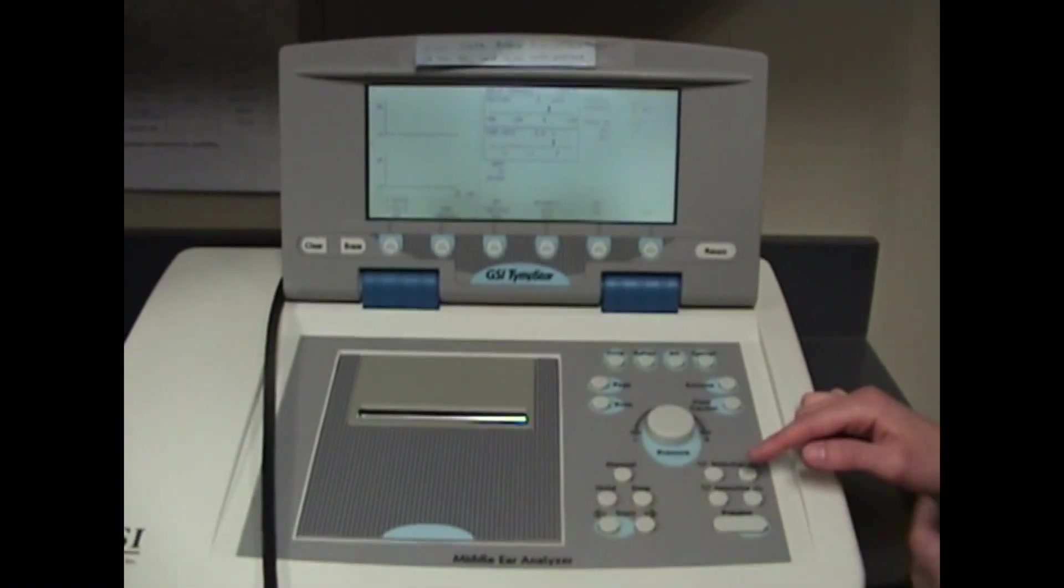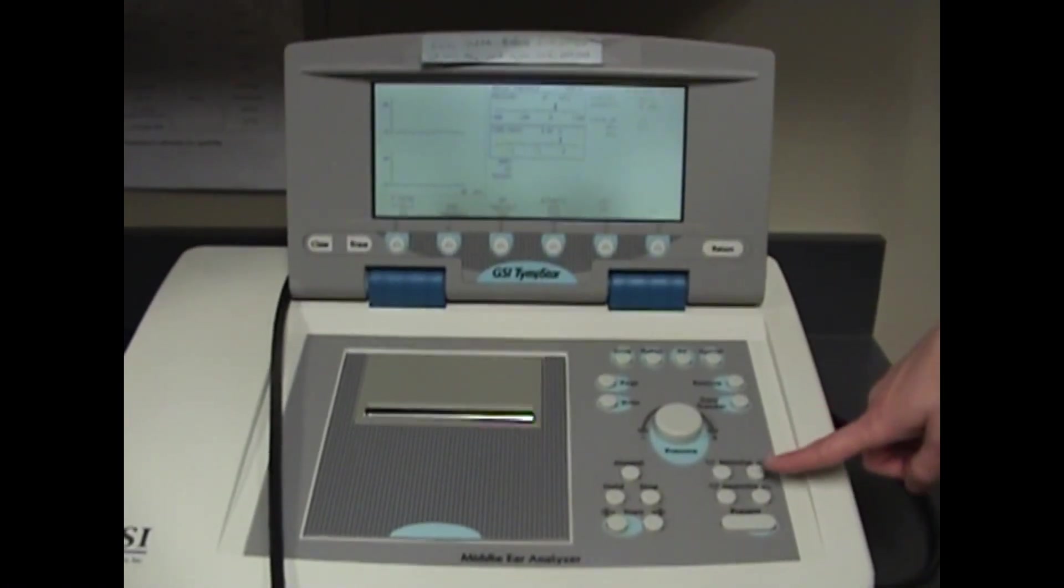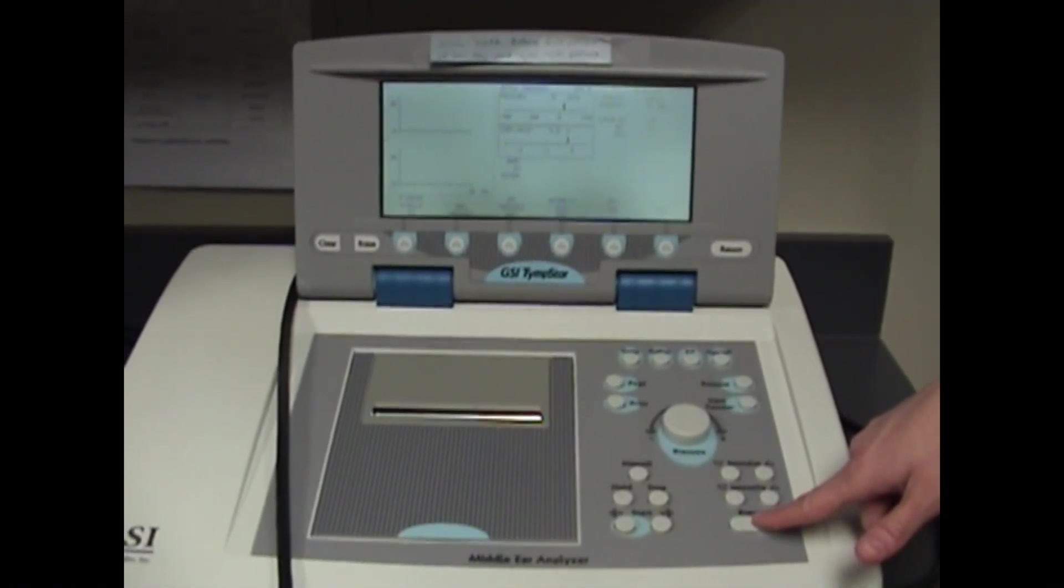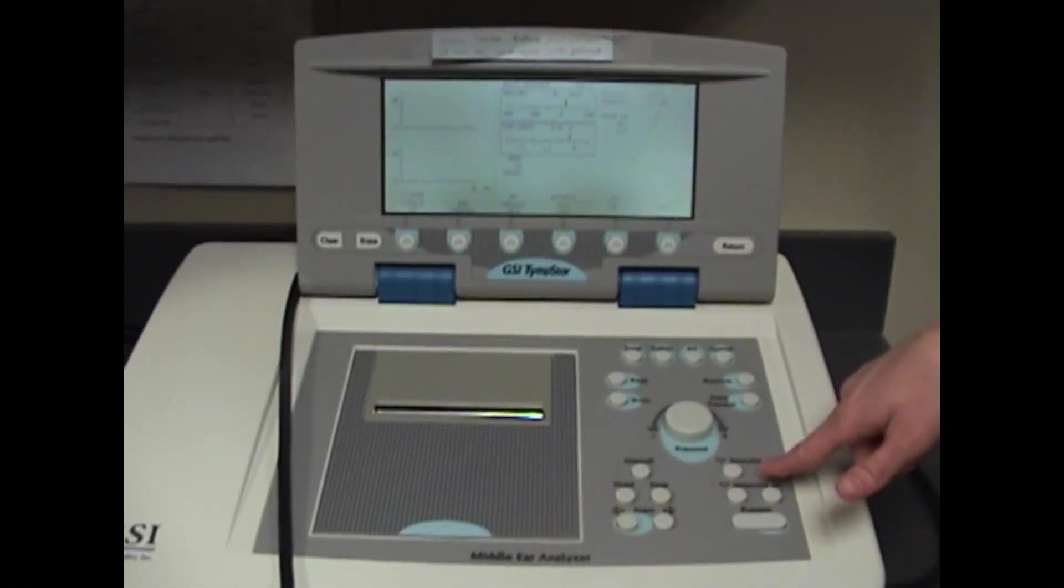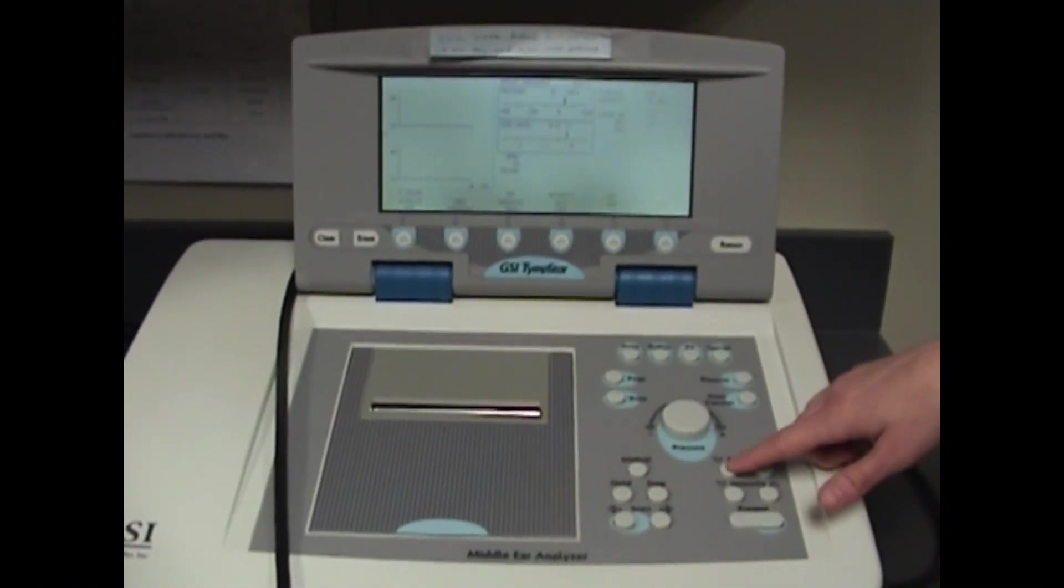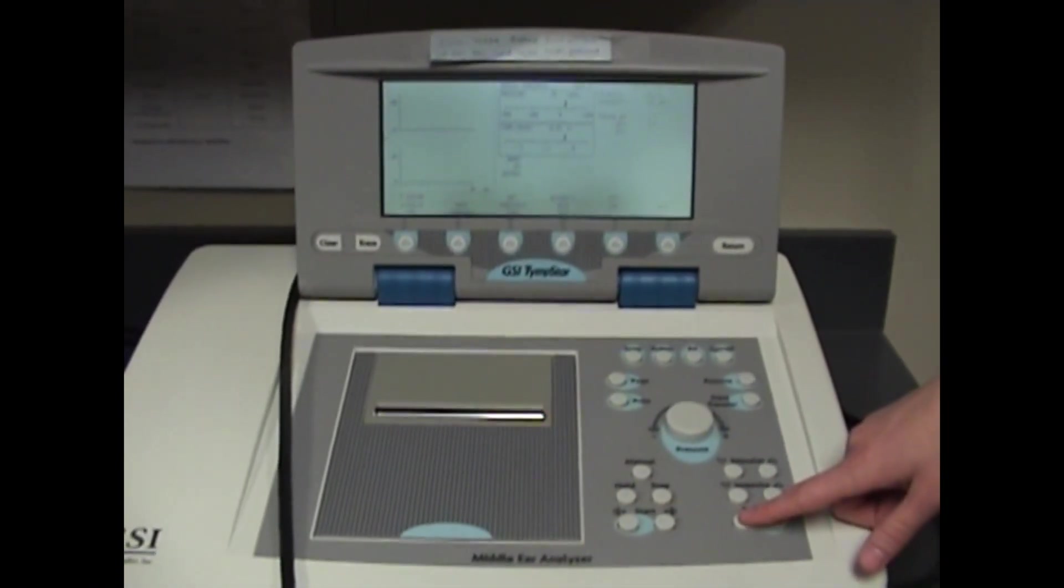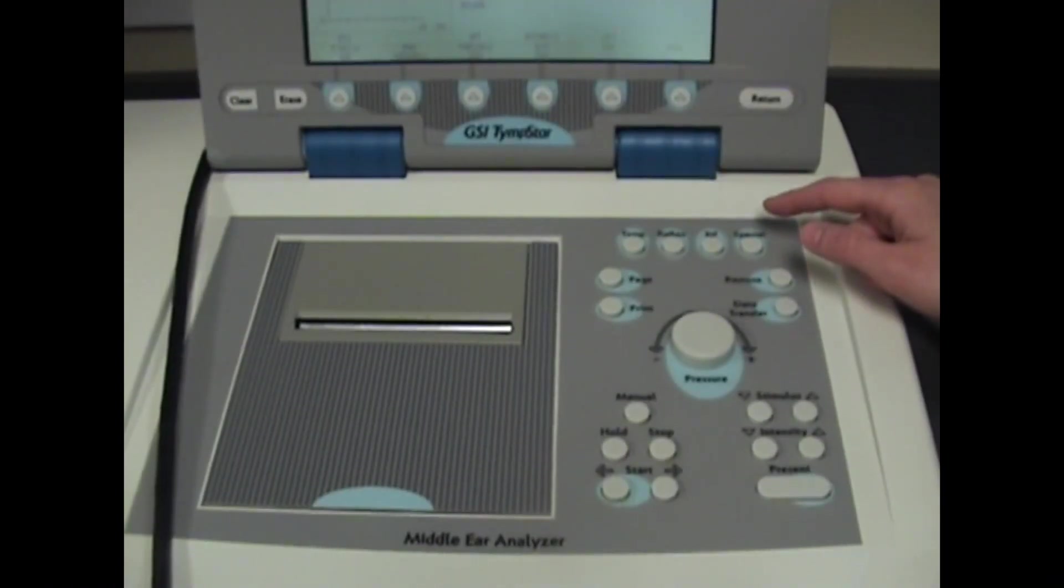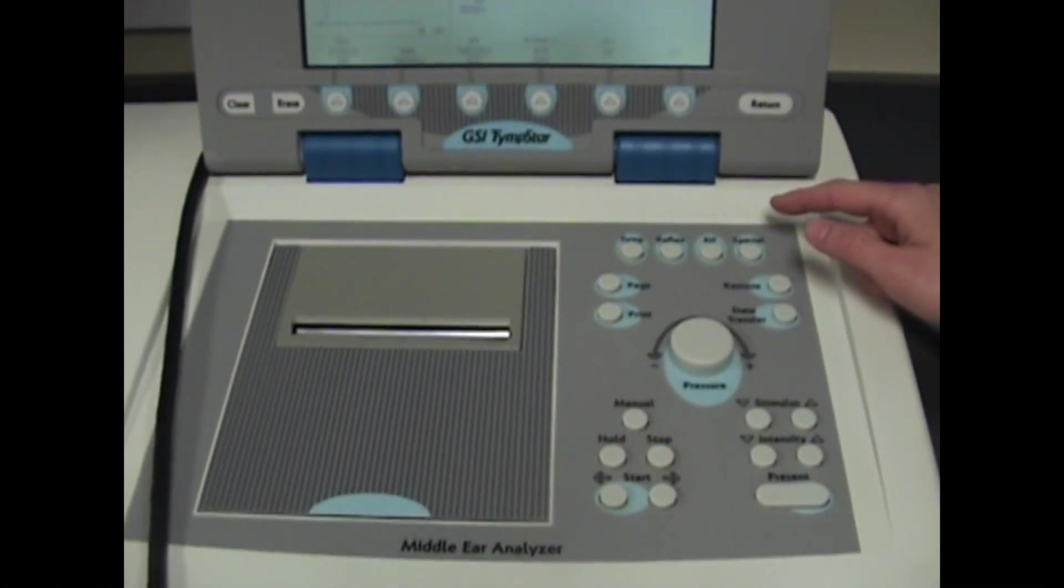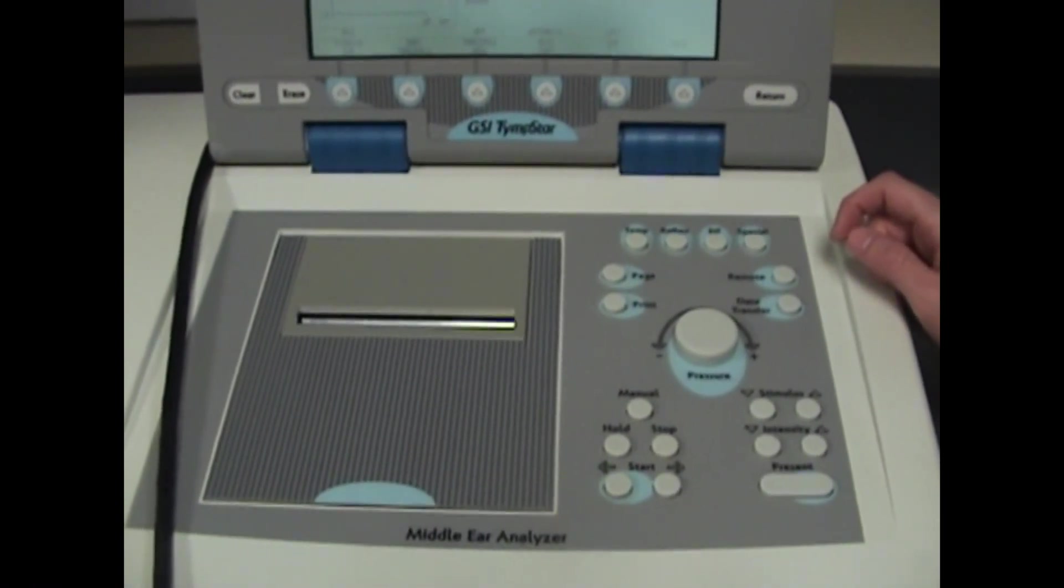We'll start at 1000 Hertz for the stimulus frequency and 85 dBHL. You'll start with 1000 Hertz, present as needed, then change the stimulus to 2000 Hertz, go through the process again, and then go down to 500 Hertz and repeat the process to get your reflex thresholds. Now you've got your contralateral reflexes at 2000 Hertz, 1000 Hertz, and 500 Hertz.